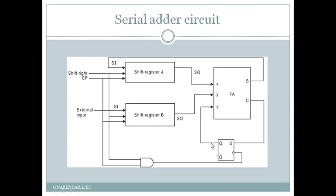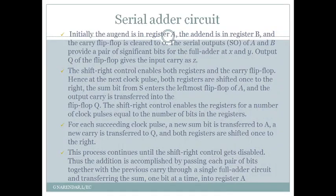Let us see by taking an example how this process is actually carried out. Initially, the addend data to be added is stored in register A and the augend is stored in register B. The carry flip-flop is cleared to 0, because we want the initial carry to the full adder to be 0 — when adding the least significant bits there is no incoming carry. So the carry bit must be made 0 by clearing the flip-flop.